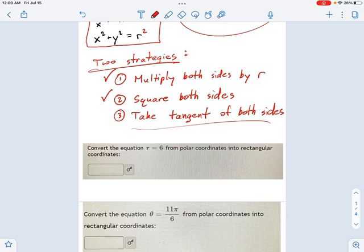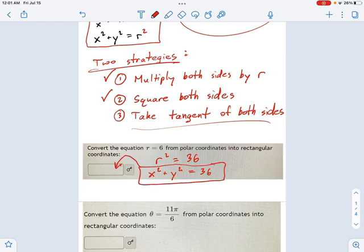Convert the equation r equals 6. Well, let's try squaring both sides. r squared equals 36. Hey, I like r squared. That's right over here. That's one of these equation conversions I can use. So I could say x squared plus y squared equals 36, and I'm done. That is a rectangular equation.